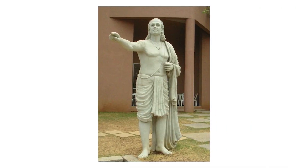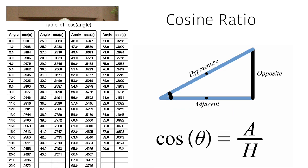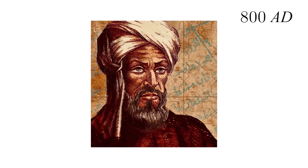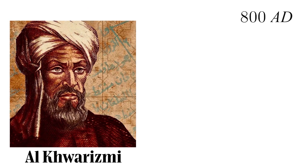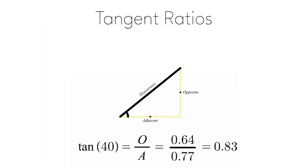Aryabhata also developed the table of cosine ratios, measuring the adjacent side to the hypotenuse. It was not until around 800 AD that Persian polymath Al Khwarizmi developed the table of tangent ratios, measuring the ratio between the opposite and adjacent sides.